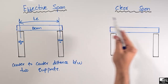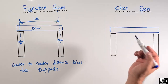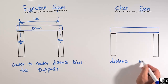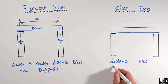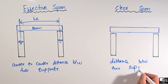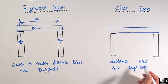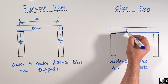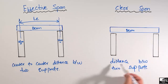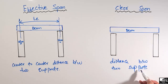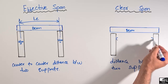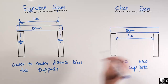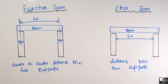Now coming to the clear span — what is the clear span? It is basically the distance between the two supports. If this is one support and this is another support, these are two columns and the beam has been supported by these two columns. This simple distance between these two supports is known as the clear span or clear length of the beam.